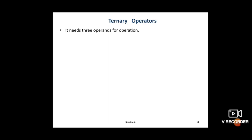Next and last subtype in arithmetic operators is the ternary operator. In the ternary operator, it needs 3 operands for the operation. It is also known as the conditional operator. If this theory comes in the board exam with this name, you have to write this complete theory.